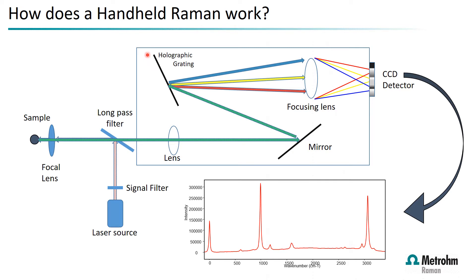We use free-space optics to send light through the system and split it on a holographic grating into its component wavelengths, then focus this onto a linear detector, which gives us the signal back into the device. There are no moving parts, so the light path does not require a moving mirror, making it completely insensitive to vibration and easily carried around.